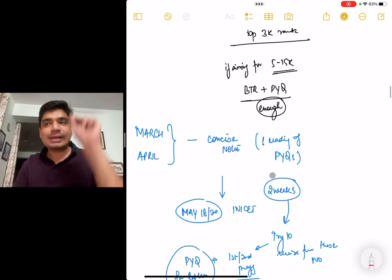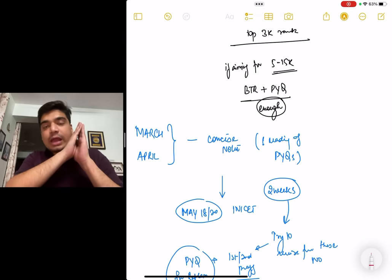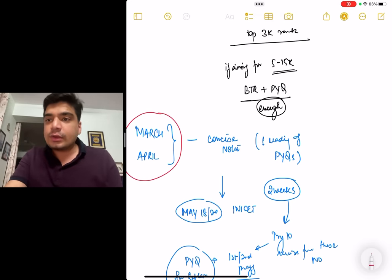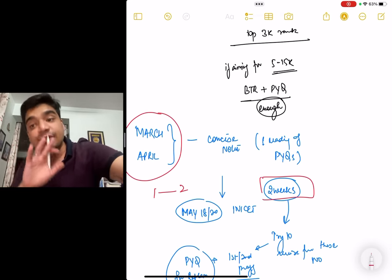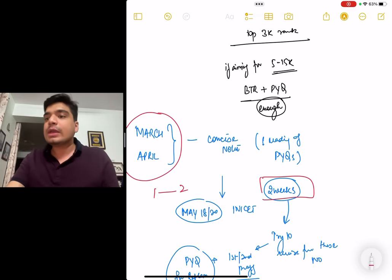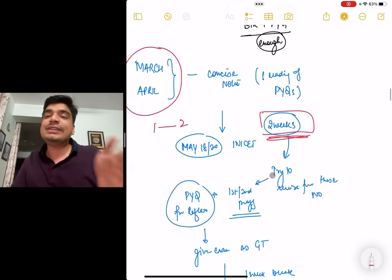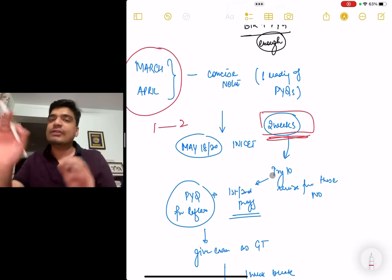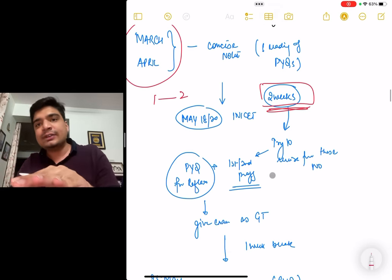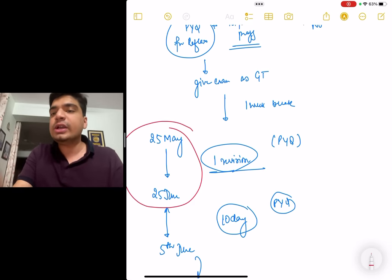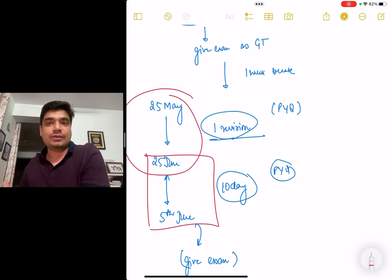So in March and April, your only goal should be making concise notes along with the reading of the first reading of the previous year question. From 1st March to the first two weeks of May, you are going to try to revise these notes, at least try to revise First Aid, at least try to revise the 1st and 2nd prof. Because INI-CT is very prof heavy. Revise the 1st and 2nd prof and solve questions from previous year questions from Reflex. Reflex has past 10 years INI-CT papers. Take those INI-CT papers as standalone GTs and after that, give INI-CT. So your half revision of the 1st and 2nd prof, which is more important for INI-CT, is done and you have done GTs as well.